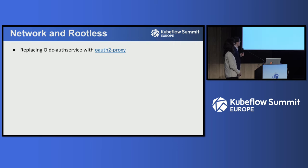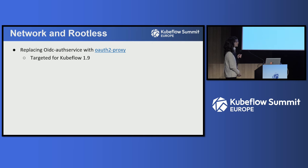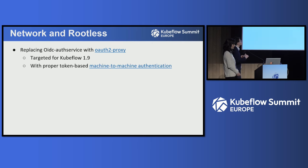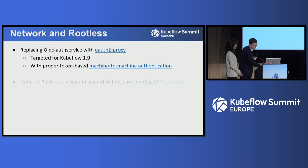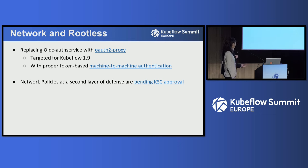There's one major change: replacing the OIDC auth service with the OAuth2 proxy, exchanging our authentication system within Kubeflow. This is finally going to happen in Kubeflow 1.9, with proper token-based machine-to-machine authentication — so no ugly authentication hacks are needed anymore. We also have network policies as a second layer of defense before Istio. If the Kubeflow Steering Committee or the Technical Oversight Committee agrees, we might also enable them by default.